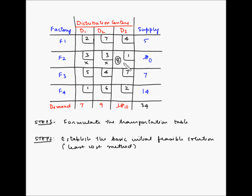We repeat and find the next square with the least cost, which is F4D1 at 1 rupee per unit. F4 has a supply capacity of 14 units while the demand at D1 is 7 units. So we allocate 7 units here. The demand at D1 becomes 0, and the remaining supply at F4 reduces to 14 minus 7, which is 7 units. Since D1's demand is fully satisfied, we cross off the remaining boxes in the D1 column.